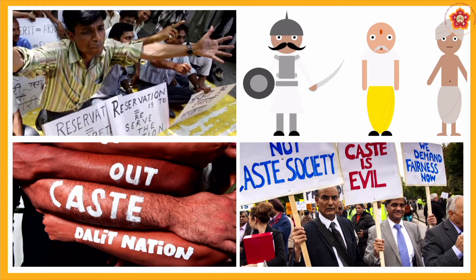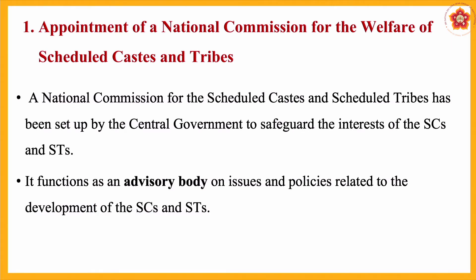Look at this picture. There have been agitations and awareness about the problems that these people were facing. The right side picture depicts the different caste system — the four castes: Brahmin, Kshatriya, Vaishya and Shudra. The first measure taken was the appointment of a National Commission for the Welfare of Scheduled Caste and Scheduled Tribes. The caste issue was considered a nationwide problem.